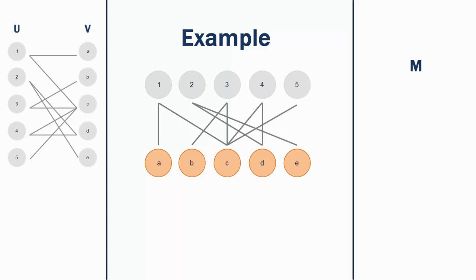We now go through all the vertices in the bottom layer, adding all the unmatched ones to a new set F. We now go through the vertices in F and attempt to reach an unmatched vertex in U using depth-first search. Starting at a vertex in F, here we choose V1, we move up the edges in the layering graph until we reach an unmatched vertex in U.